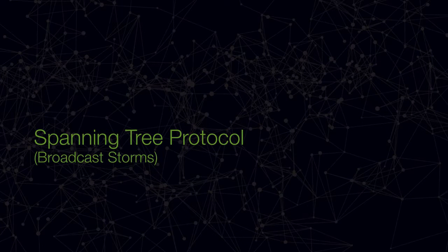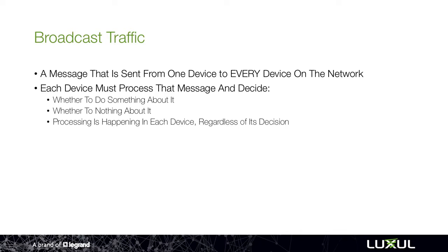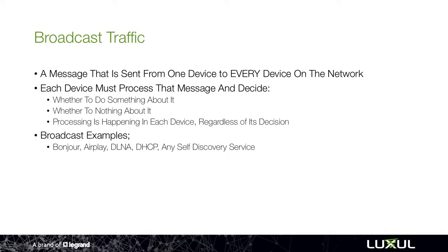In order to understand what spanning tree is and why it's important, let's talk about broadcast traffic on our network. Broadcast traffic is basically a message that is sent from one device on the network to every other device on the network. Each device must then process that message and decide whether to do something about it or whether to do nothing about it. That processing is happening in each device regardless of its decision. A broadcast message example is something like Bonjour, commonly known as AirPlay, or DLNA, or DHCP, or any self-discovery service or device on a network.